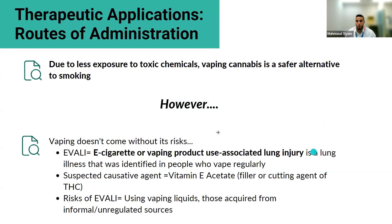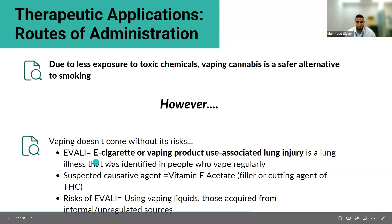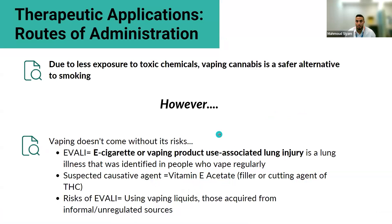Due to less exposure to toxic chemicals, vaping cannabis is a safer alternative for patients who want to inhale. However, vaping has its own risks — a condition called E-VALI was identified in patients who vape very regularly, resulting from cutting or filler agents added specifically to vaping liquids such as vitamin E acetate, which can adhere to lung tissue and cause issues like popcorn lung. This is why vaping dry cannabis is generally regarded as safer than vaping liquids.